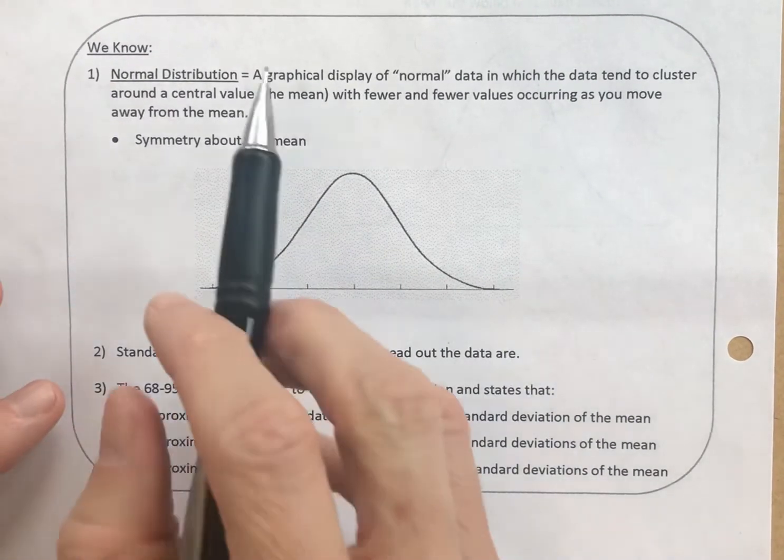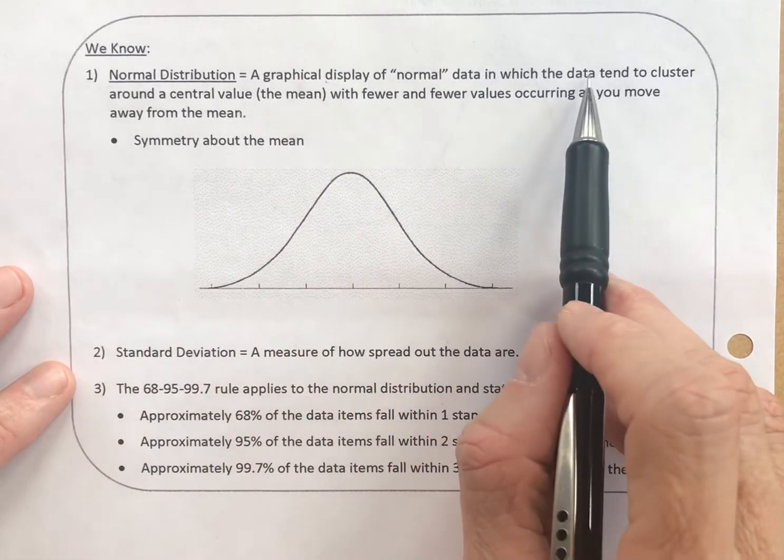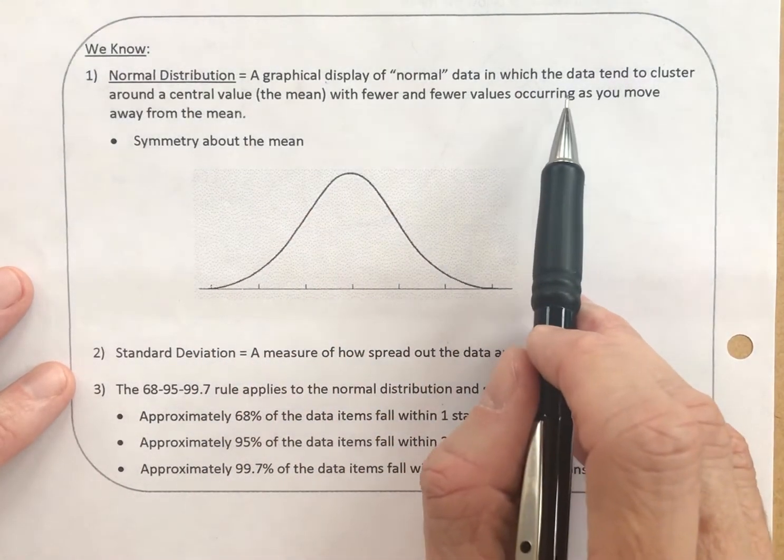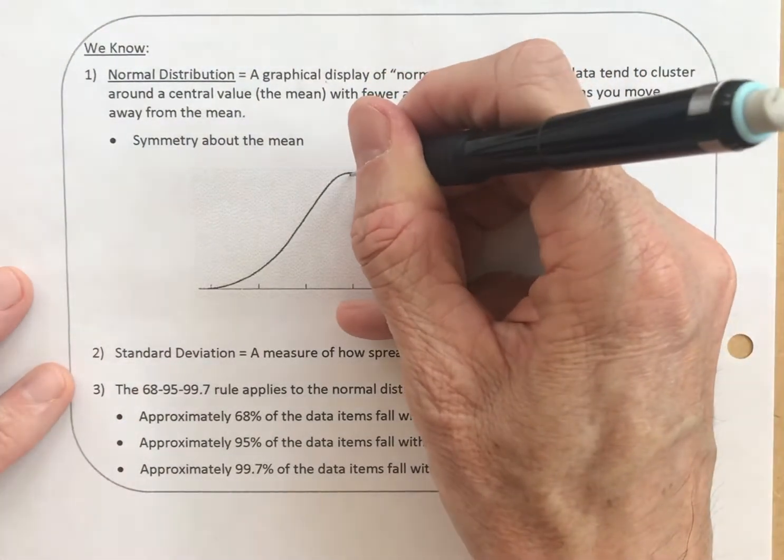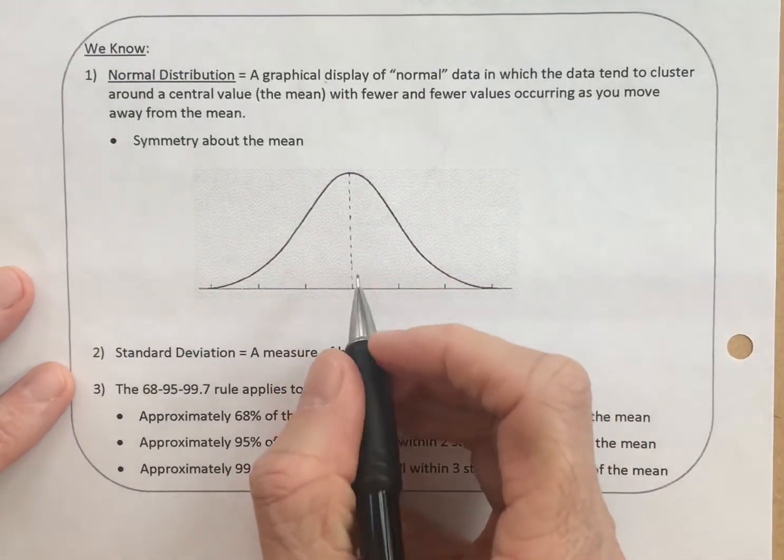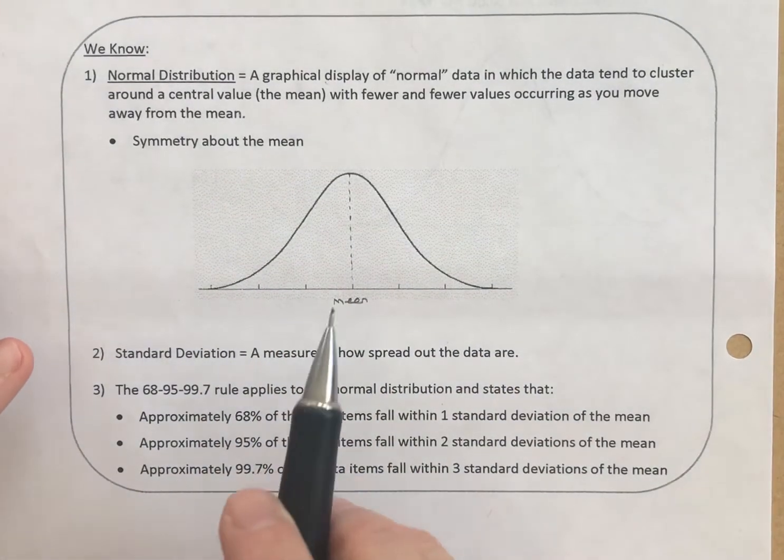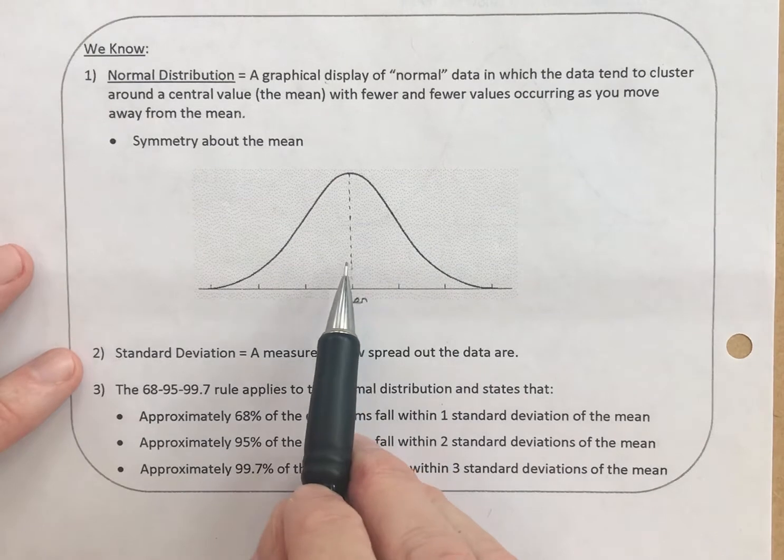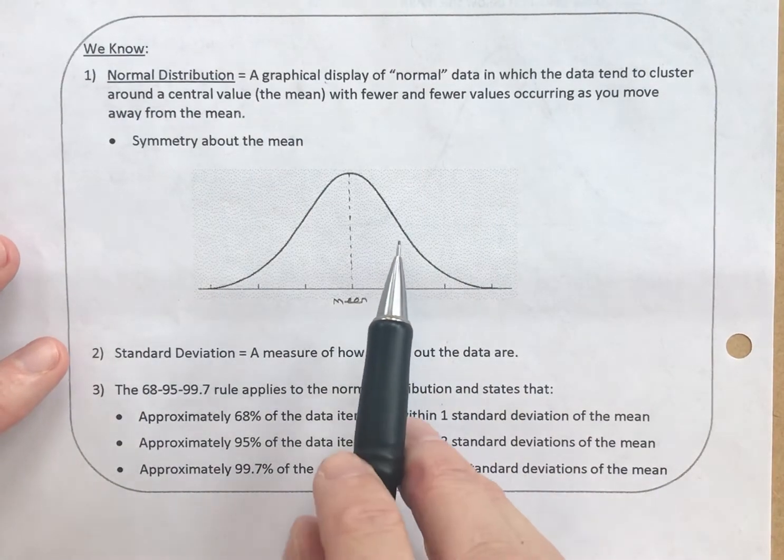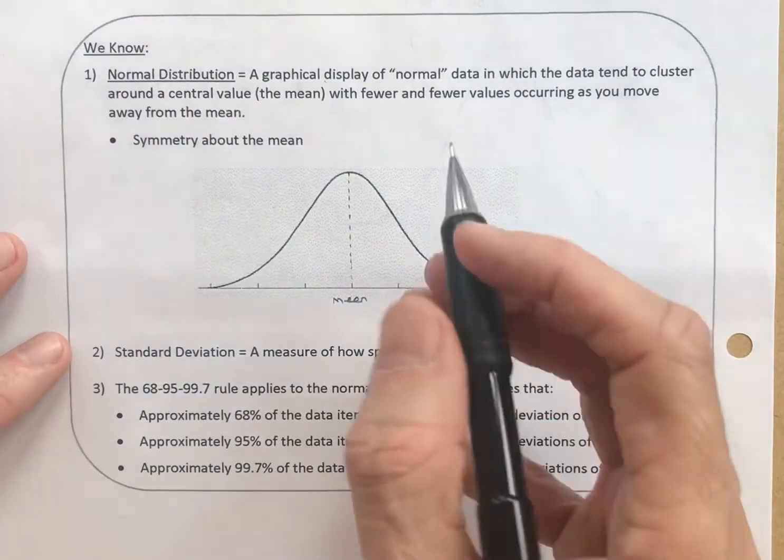What do we know? We know what a normal distribution is - a graphical display of normal data in which the data tend to cluster around a central value (the mean) with fewer and fewer values occurring as you move away from the mean. So there is my bell curve, and this is my mean. All the data is represented by the area under the curve, which is 100% or 1. As you get further and further away from the mean, the area under the curve gets smaller and smaller. Most of your data is occurring around the mean. We know we have symmetry about the mean.